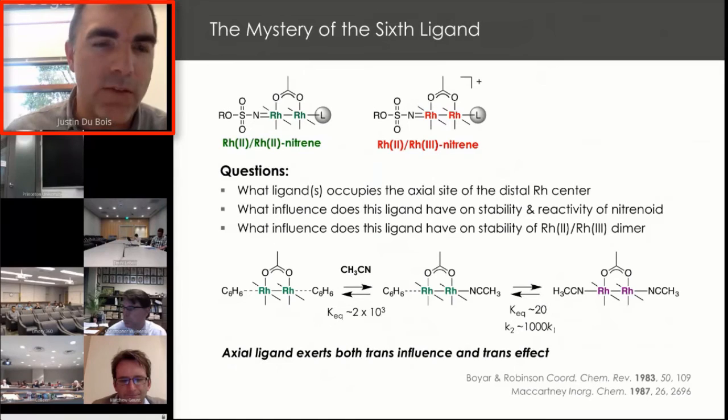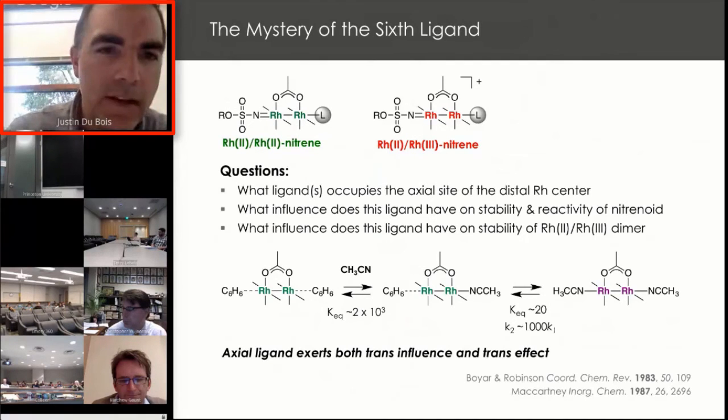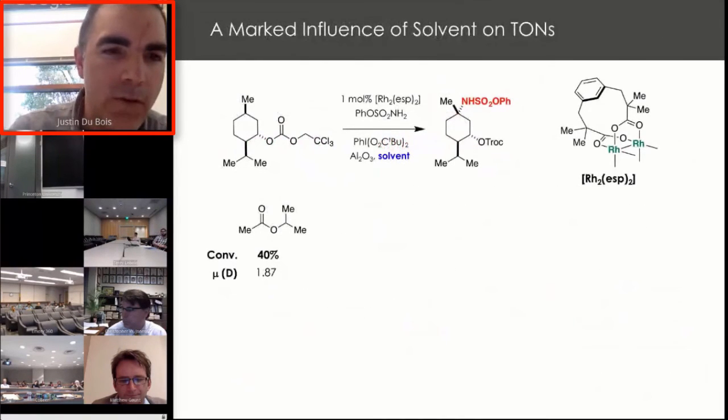The challenge is to understand how this C-H abstraction reaction relates to the bulk solution experiment and how it's related to the diminution in catalyst activity or loss in turnover number. Along with these data, we've been puzzling for a long time over what is really the role of the sixth ligand. When you think about these rhodium species, whether it's the 2,2-nitrene or the 2,3-nitrene, there is another ligand bound to the second rhodium, the distal rhodium.